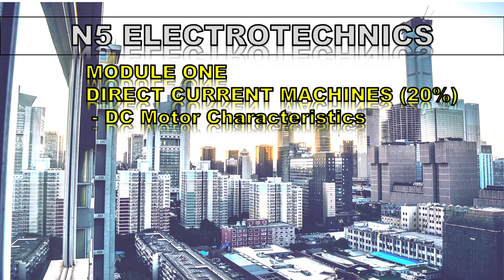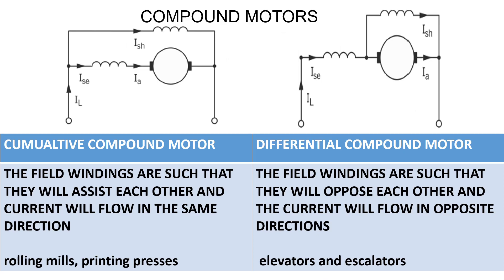Welcome to this calculation for N5 Electrotechnics, still in module one for direct current machines. In this calculation we'll be looking at a short shunt compound machine. We get two types of compound machines: the long shunt, which includes the series winding, and the short shunt compound machine, where the electrical connection excludes the series winding. These are motors, so they are still drawing current from the supply.